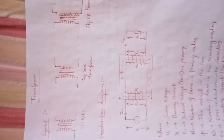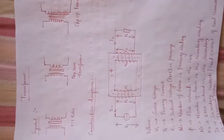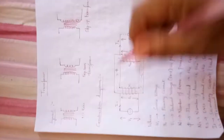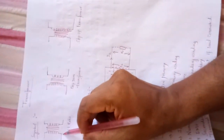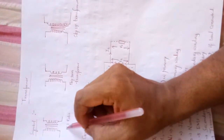Before going to the actual concept, let me show you the transformer symbolic representation. There are totally three symbolic representations. The first one is the 1:1 ratio transformer, where the number of turns in the primary side as well as in the secondary side are the same, hence it is called a 1:1 ratio transformer.